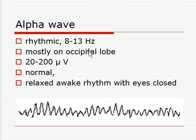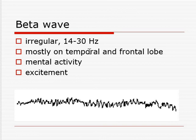The voltage of alpha waves is 20 to 200 µV. It is seen in a relaxed, awake, rhythmic state when eyes are closed — for example, when we are listening to music with eyes closed. The beta wave is irregular with a wide frequency range of 14 to 30 Hz. It occurs in the temporal and frontal lobe and is associated with mental activity and excitement.